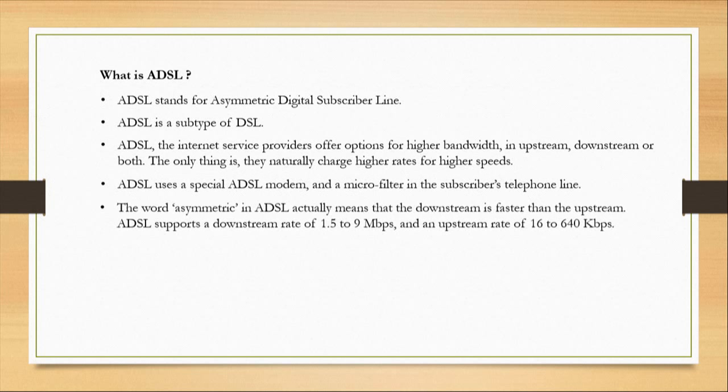The word 'asymmetric' in ADSL actually means that downstream is faster than upstream. ADSL supports a downstream rate of 1.5 to 9 Mbps and an upstream rate of 16 to 640 Kbps.